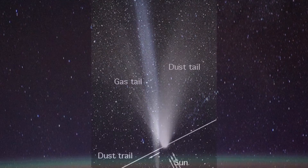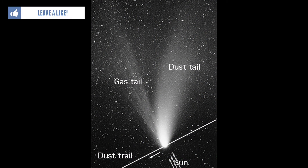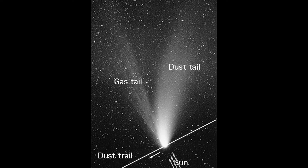Comets develop two tails as they travel closer to the Sun. The first tail is a straight gas tail and the second one is a curved dust tail. The gas tail is created by the solar wind, which pushes gas away from the comet's coma. The dust from the coma is not affected by magnetic fields but is vaporized by the Sun's heat and then forms a curved tail which follows the comet's orbit.